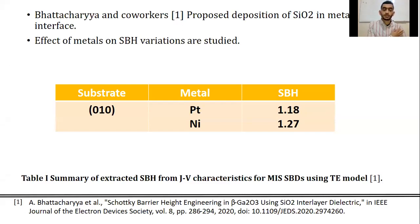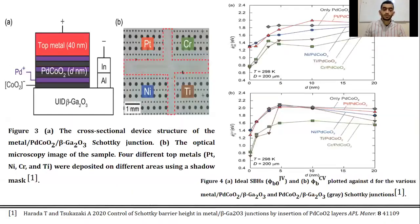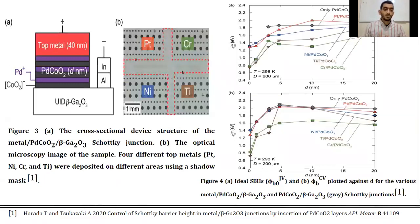So Schottky barrier height values are not predictable. Among the proposed solutions to reduce the effects of surface states is the deposition of an insulator between metal and gallium oxide. Bhattacharya and co-workers proposed deposition of silicon dioxide at the interface between metal and gallium oxide. Another solution proposed by Harada and co-workers is deposition of a layer at the interface between metal and gallium oxide, consisting of a mixture of palladium and cobalt oxide, as presented in figure 3. As presented in figure 4, Schottky barrier height increases with interlayer thickness.